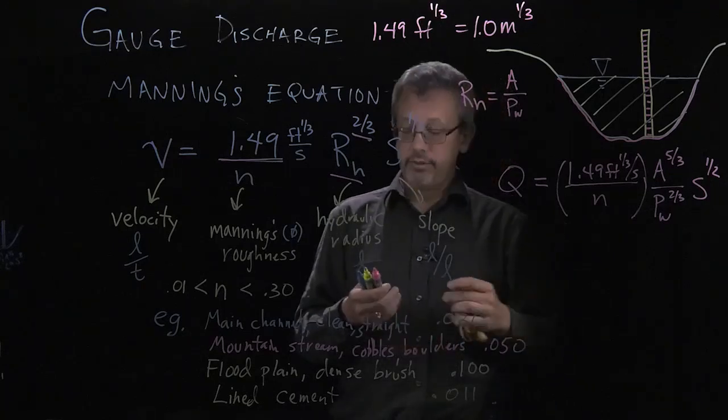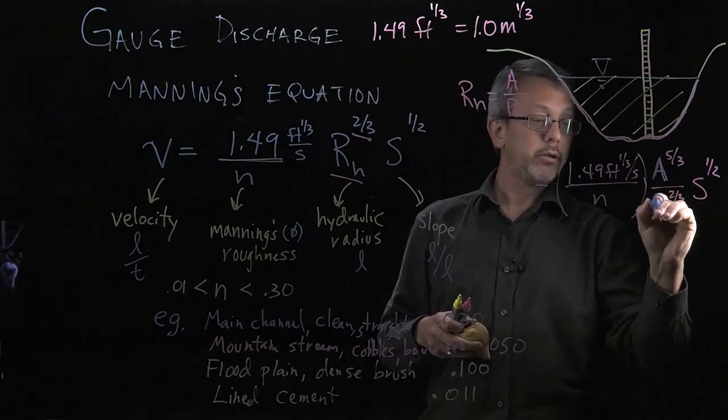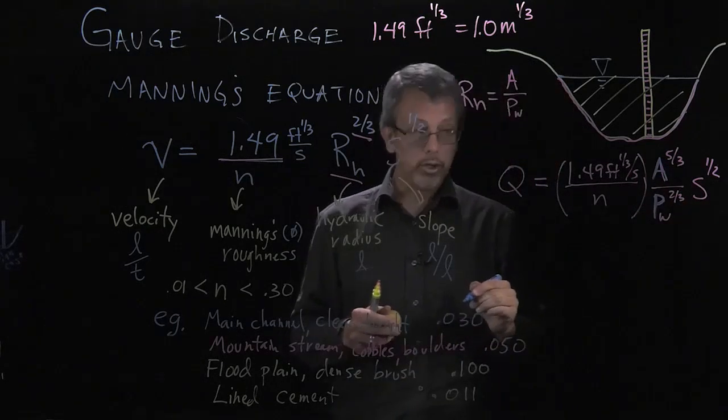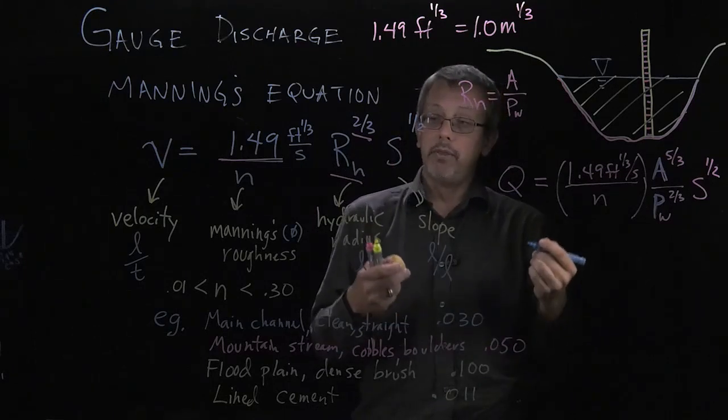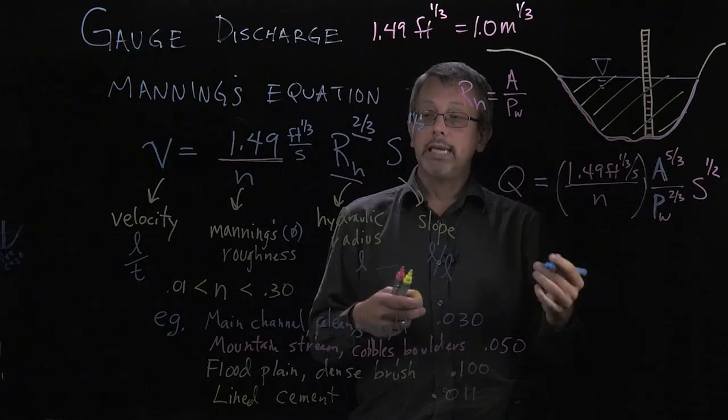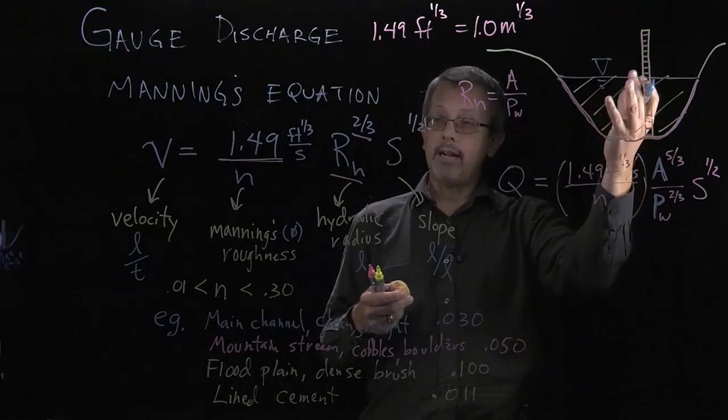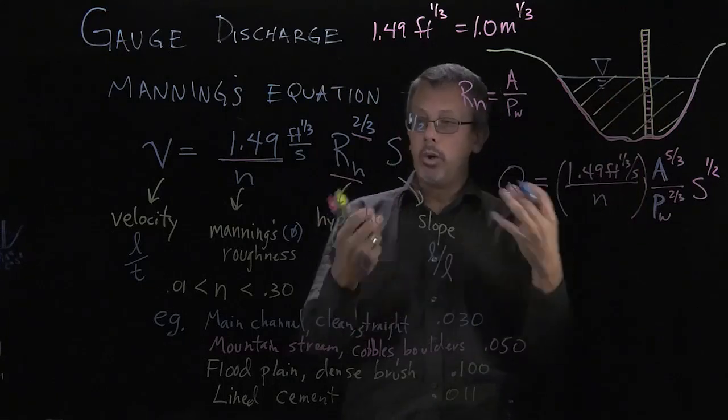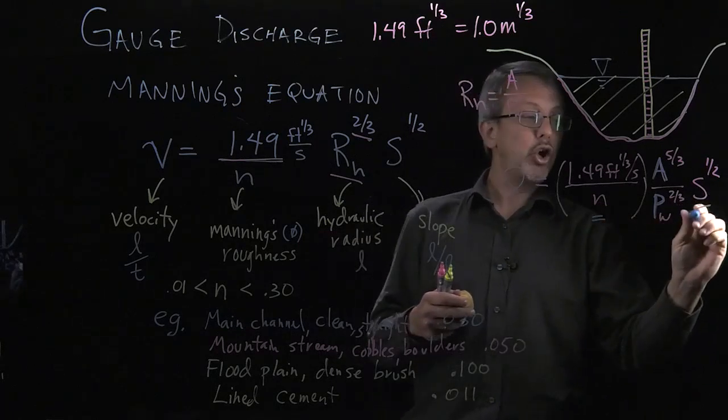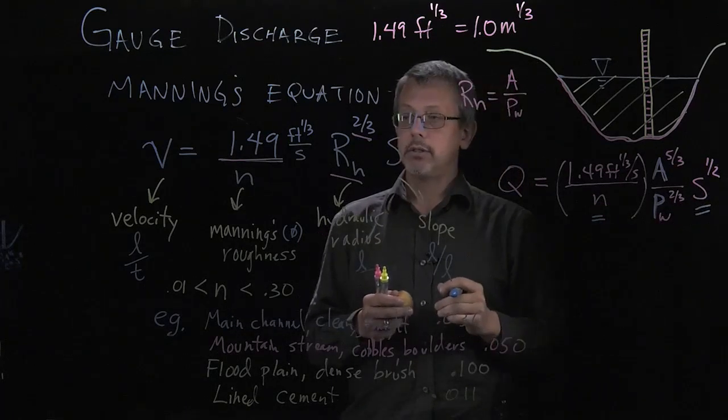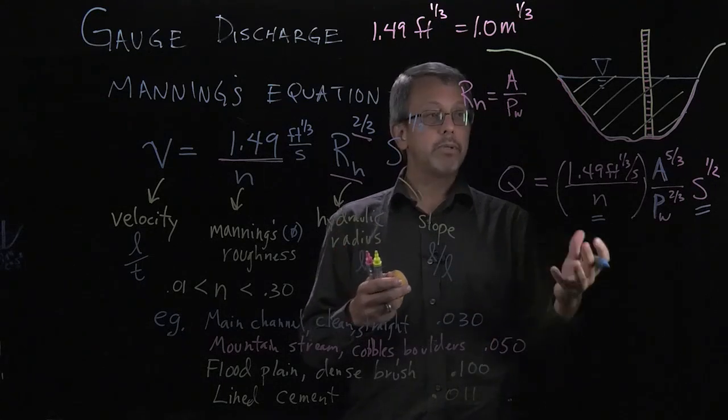Note that all of these things, our area, our wetted perimeter, and our RH over here, all three of these have a dependency upon the depth. So if we're able to calculate them from the depth or we somehow have them from reading the gauge, we can use that information plus the known information about the area, the known information about the roughness and the slope near where the gauge is to help us establish the flow rate.